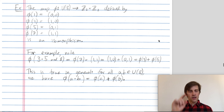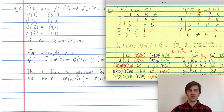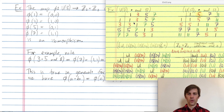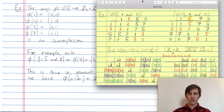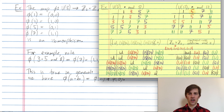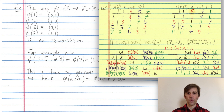As another example isomorphism, let's consider the map phi from U8 to Z2 cross Z2 defined as follows. U8 has elements 1, 3, 5, and 7. Z2 cross Z2 has elements (0,0), (1,0), (0,1), and (1,1). We map elements over as drawn in this color coding: 1 maps to (0,0), 3 maps to (1,0), 5 maps to (0,1), and 7 maps to (1,1). To check this is an isomorphism for any two elements a and b in U8, combining them in U8 and then mapping over should give the same thing as mapping them over and then combining in Z2 cross Z2.